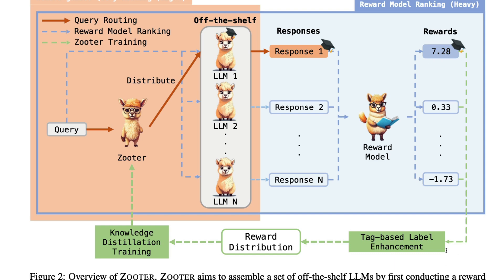With those rewards, you create tags — tag-based label enhancement happens, then reward distribution happens, and finally knowledge distillation training happens. The output of that knowledge distillation training is the DeBERTa model. That 86 million parameter model decides which LLM should answer a particular query, because it is trained for that. Query routing happens with this small ranker, reward model training happens here, and ZOOTER training happens here.